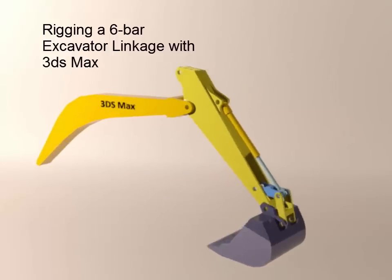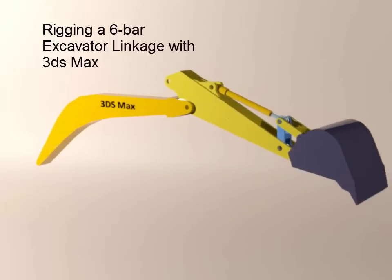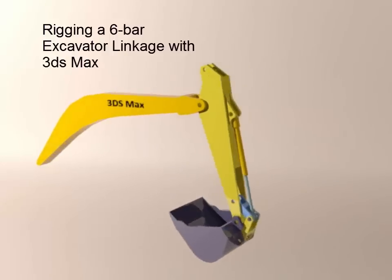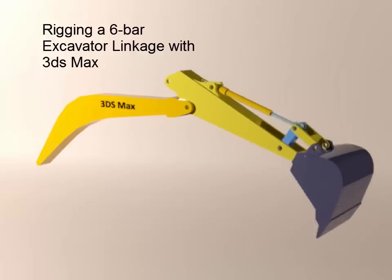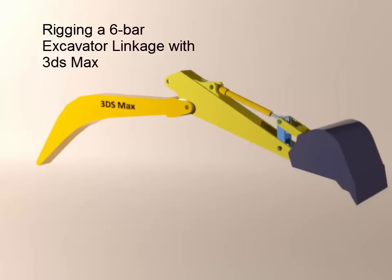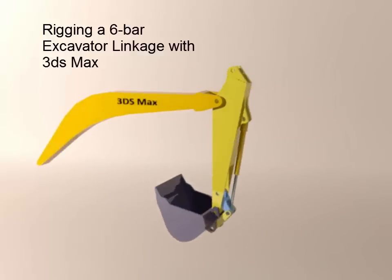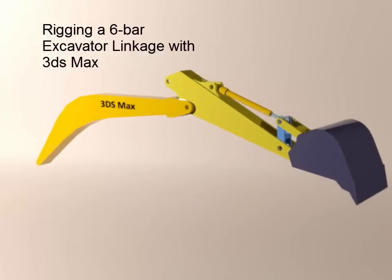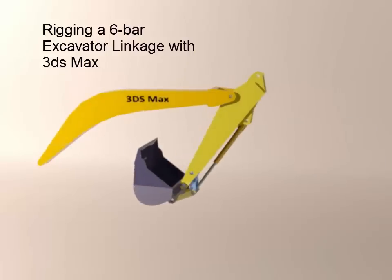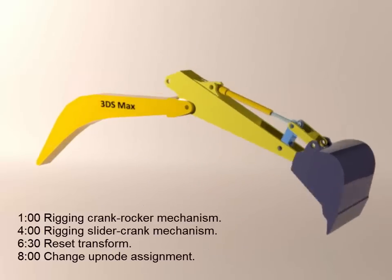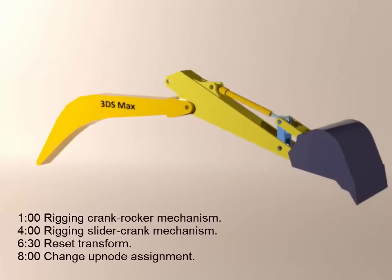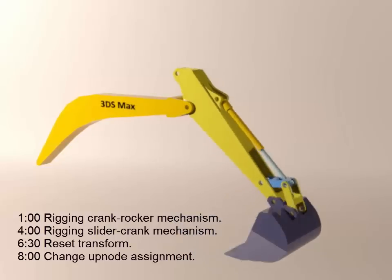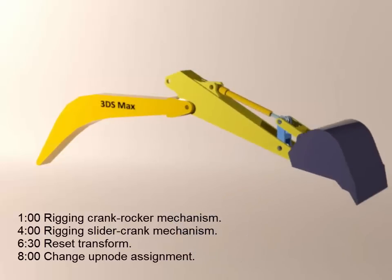This video shows a process for modeling the kinematic action of a 6-bar mechanism with Autodesk 3D Studio Max version 2014. A simple model of a portion of an excavator will be used to show the steps of the rigging process.